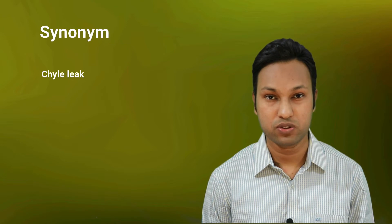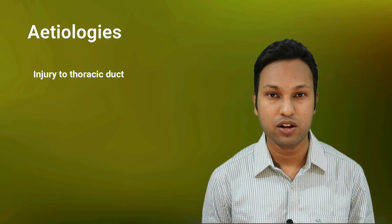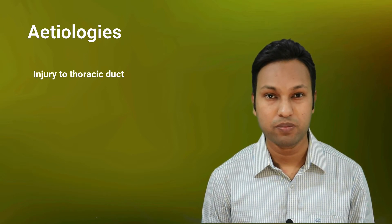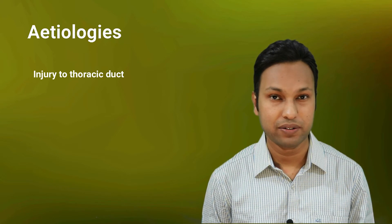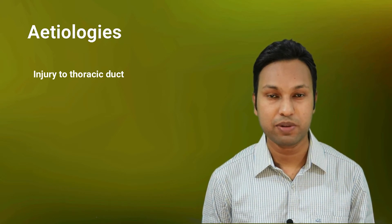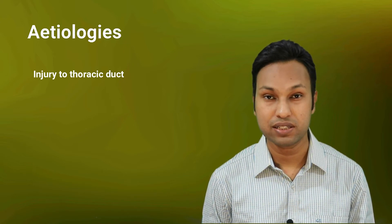Chyle's fistula, also known as chyle leak, is not a true fistula — rather, the chyle finds its way through the drain. The main etiology is injury to the thoracic duct, which can result from neck dissection involving the left supraclavicular fascia, especially the level 4 lymph node area. The thoracic duct is at risk during division of the lower end of the internal jugular vein.